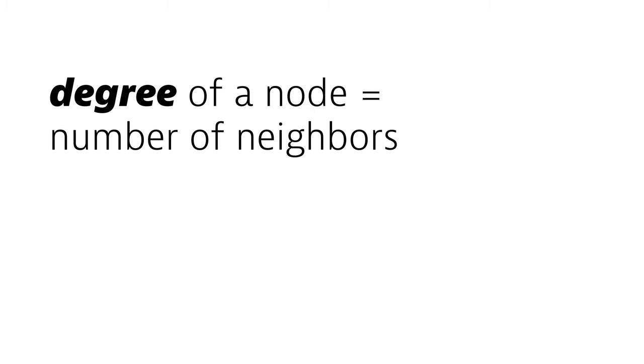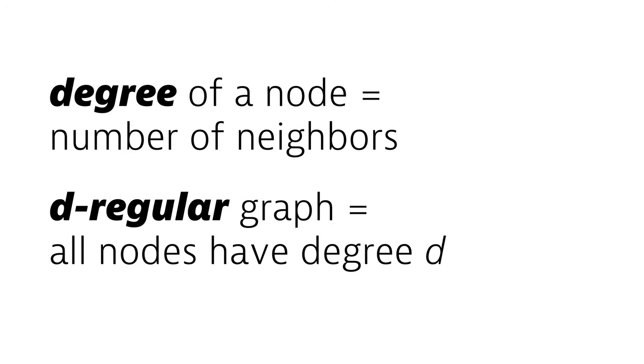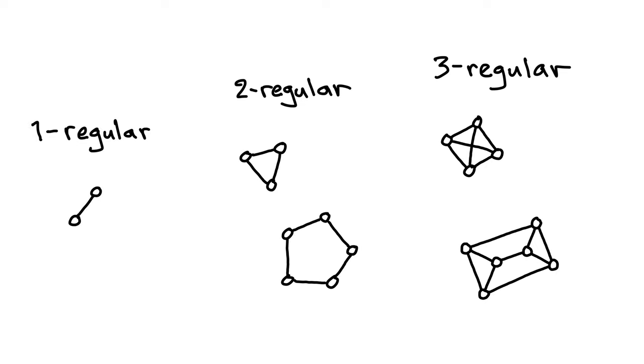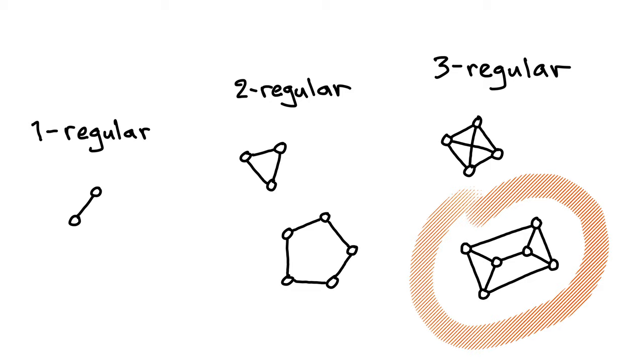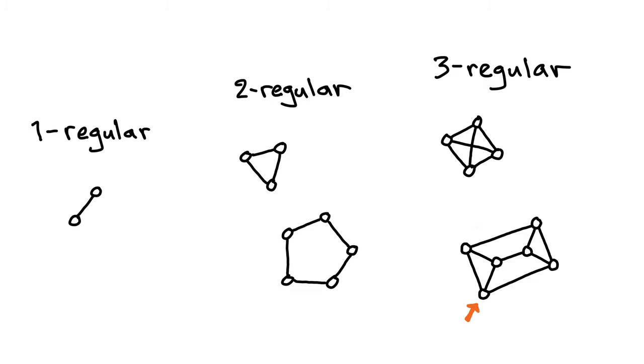Let me decompose this and explain all words here. The degree of a node is the number of neighbors, and the graph is d-regular if all nodes have degree d. So we are focusing on graphs in which all nodes have the same number of neighbors. Here are some examples of one-regular graphs, two-regular graphs, and three-regular graphs. For example, this graph here is three-regular — if you look at any node, you will see that it has exactly three neighbors.